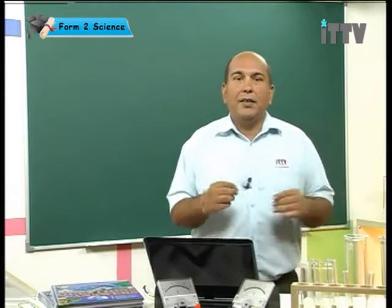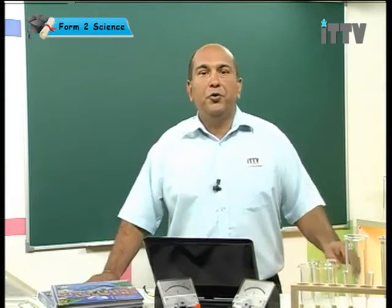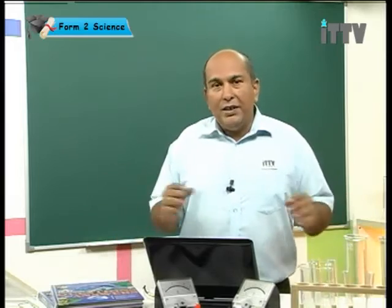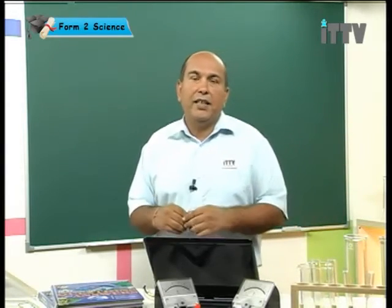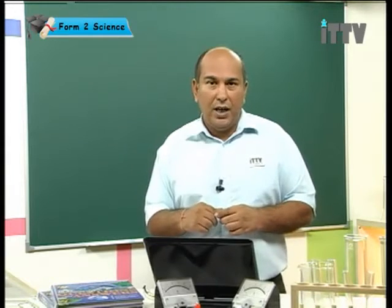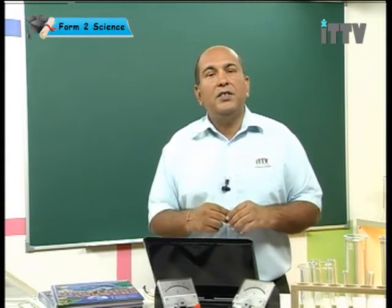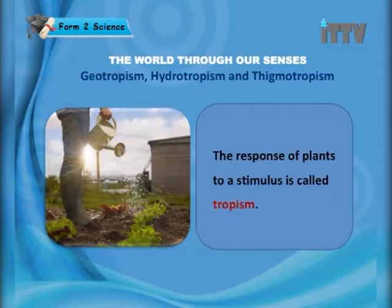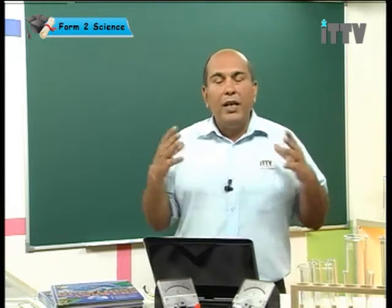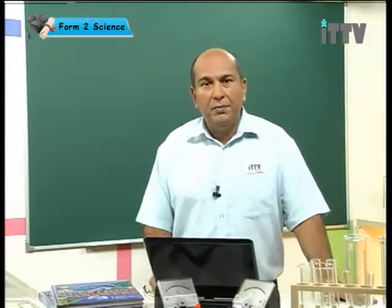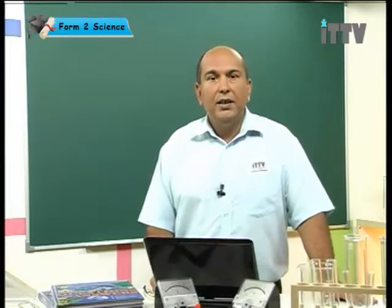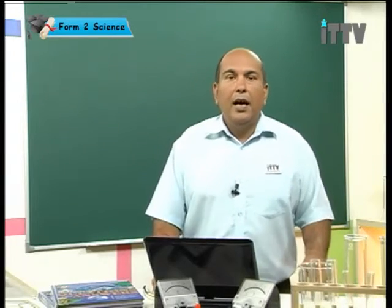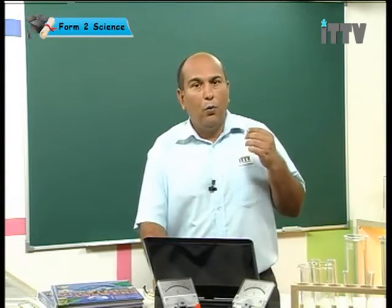We've already started our investigation into plant responses. We realise from previous lessons that plants do respond to stimuli, although the response is very slow and not so obvious. The response of plants to a stimulus is called tropism. There were three key tropisms: phototropism for light stimulus, geotropism for gravity, and hydrotropism for water stimulus.